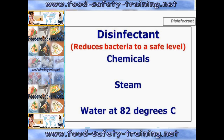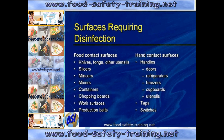Disinfectants reduce bacteria to a safe level and there are three types of disinfectant: chemical disinfectants such as bleach, steam, and water at 82 degrees Celsius or above. There are only two types of surfaces requiring disinfection: food contact surfaces and hand contact surfaces.